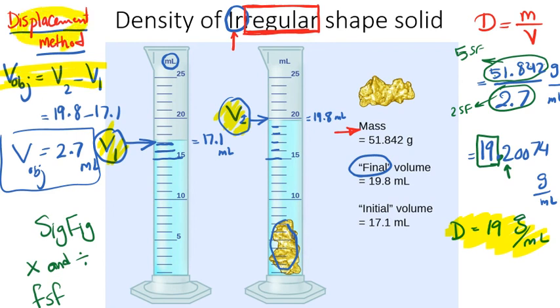By this example, I explained how to measure the volume of an irregular shaped solid based on the displacement method and how to plug into the equation and solve your problem. Hope it helps you understand how to measure the density of irregular shaped solids. Thank you for watching this video.